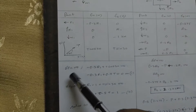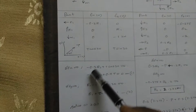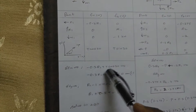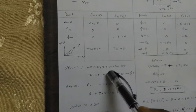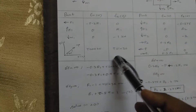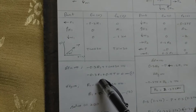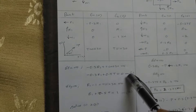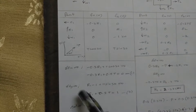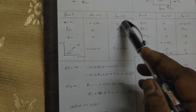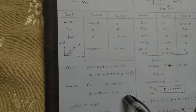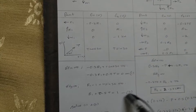Summation of F of x equal to 0: minus 0.3 R1 plus T cos 30 equal to 0. The cos 30 value is 0.866, approximately 0.9. So minus 0.3 R1 plus 0.9 T equal to 0 — that is the first equation. Summation of F of y equal to 0: R1 minus 1 plus T sin 30 equal to 0 — that is the second equation.